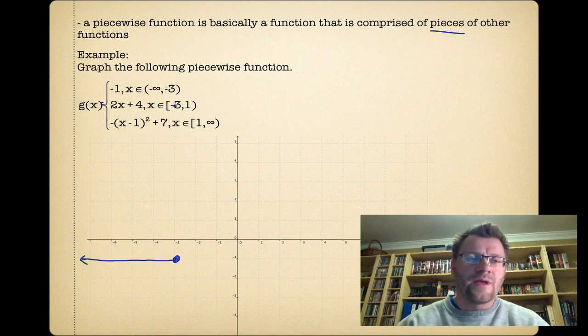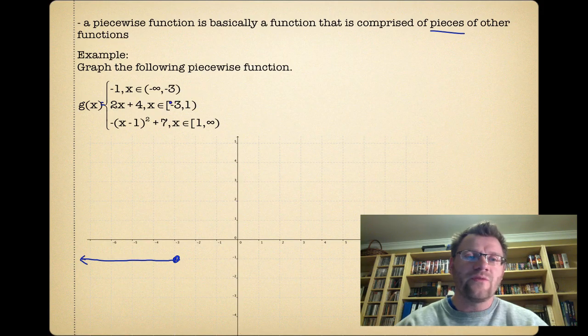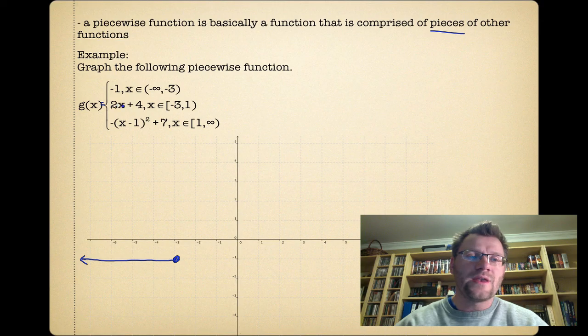Now, from negative three to positive one, it looks like 2x + 4. So really all you need to do to figure out what this sort of thing looks like, we know it's going to be a line. Well, we can just plug in an x value of negative three, and then we can plug in an x value of one and just connect the dots with a straight line. So if we plug in a negative three, we get negative six plus four, negative six plus four is negative two.